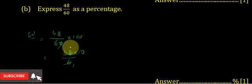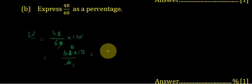6 goes into 48 eight times, and 8 multiplied by 10 is 80. So 80 percent is the form of 48 upon 60 when we represent it in percentage.